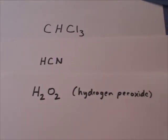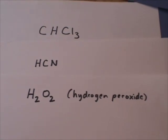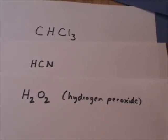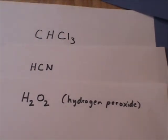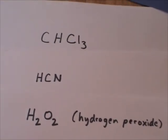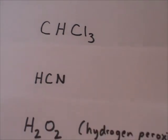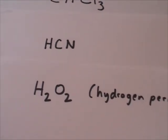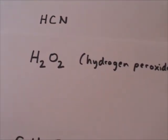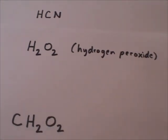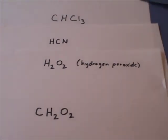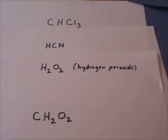Before we move on to polyatomic anions and structures that have either a positive charge or a negative charge, why don't you go ahead and practice and do these formulas. This is called CHCl3, HCN, H2O2, which is hydrogen peroxide, and then CH2O2.